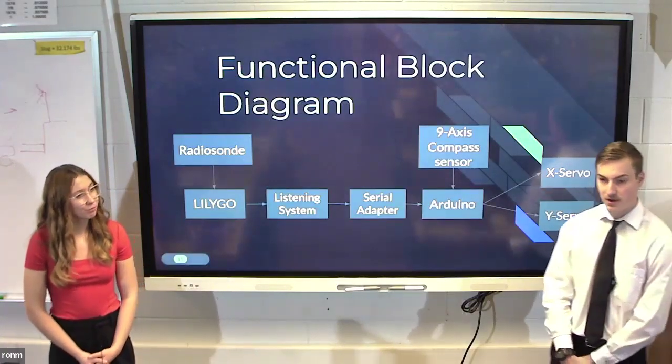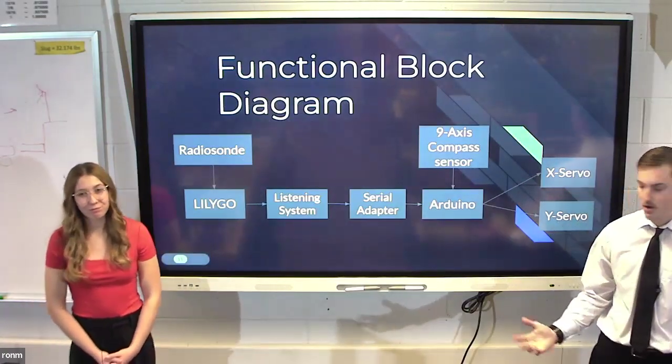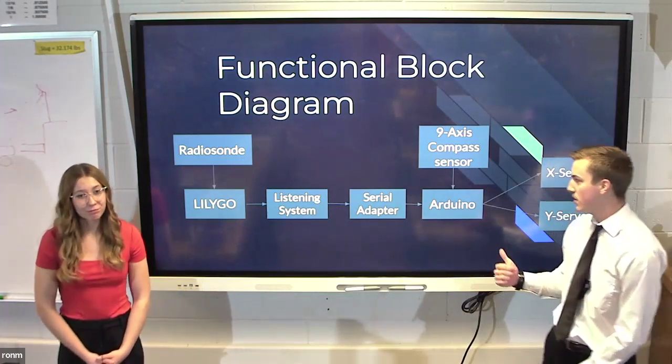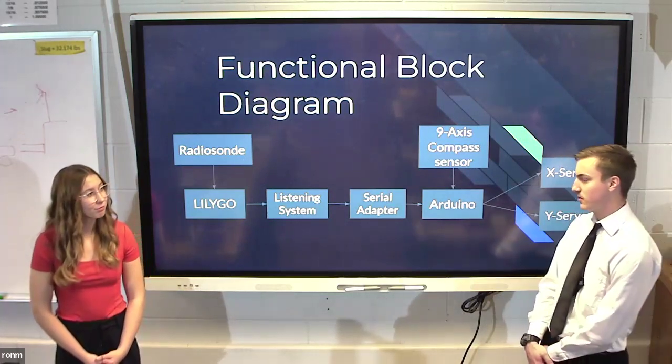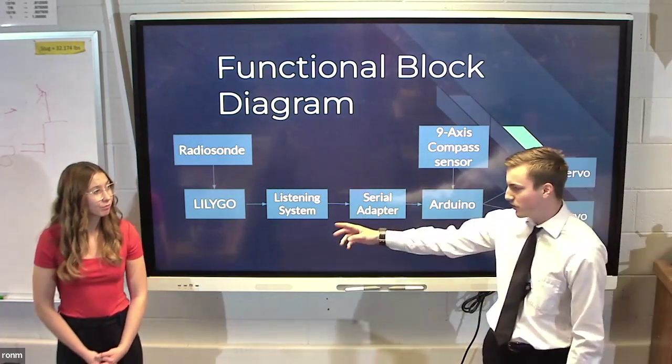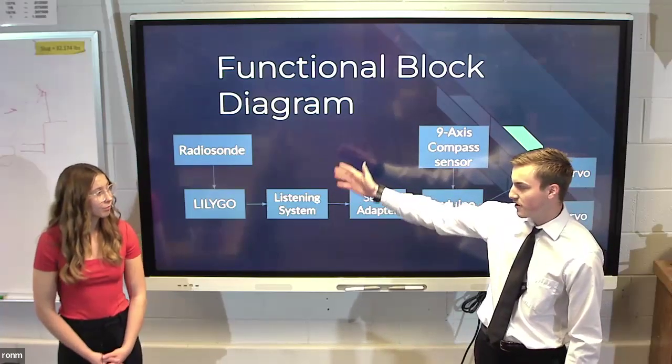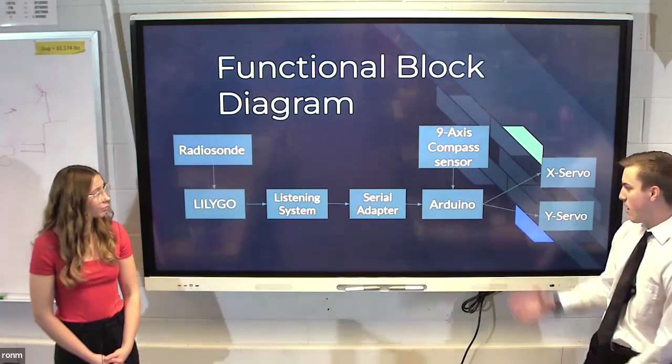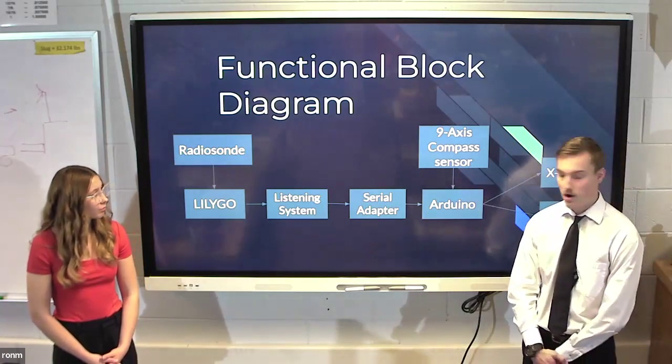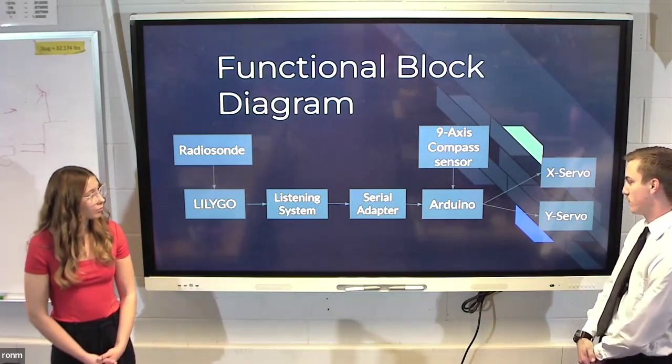So this is our function block diagram. This is basically how it all works. We have an Arduino, which takes information from the nine-axis sensor, and which also will take information from the LilyGo, which will collect data from the radio sonde. All this information will go into our code and then it will output into our servos.